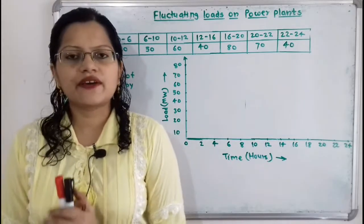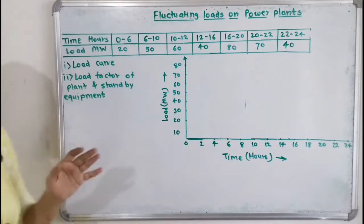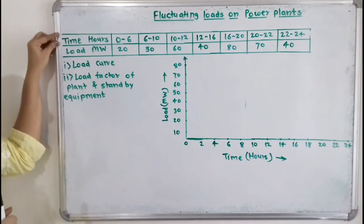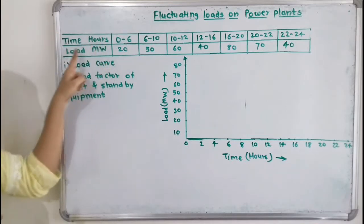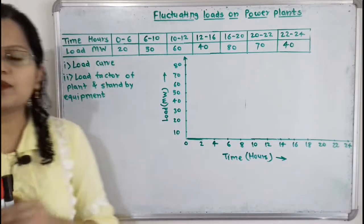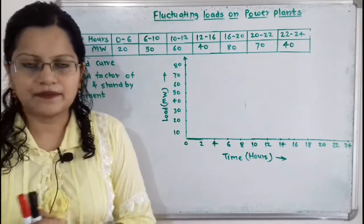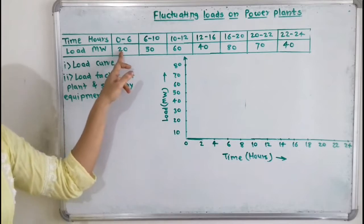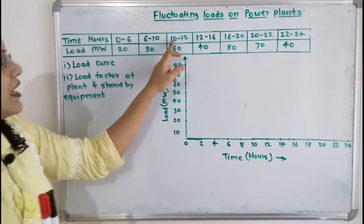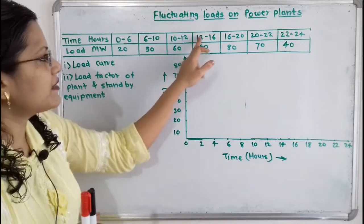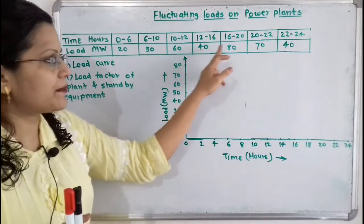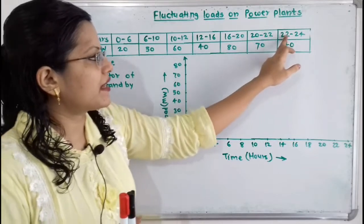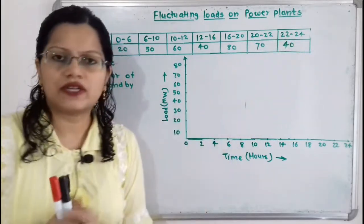In the given question, a table is given showing power supply loads to consumers. The first row is time in hours and the second row is the load provided in that particular time period. During 0 to 6: 20 megawatt; 6 to 10: 50 megawatt; 10 to 12: 60 megawatt; 12 to 16: 40 megawatt; 16 to 20: 80 megawatt; 20 to 22: 70 megawatt; and 22 to 24: 40 megawatt.